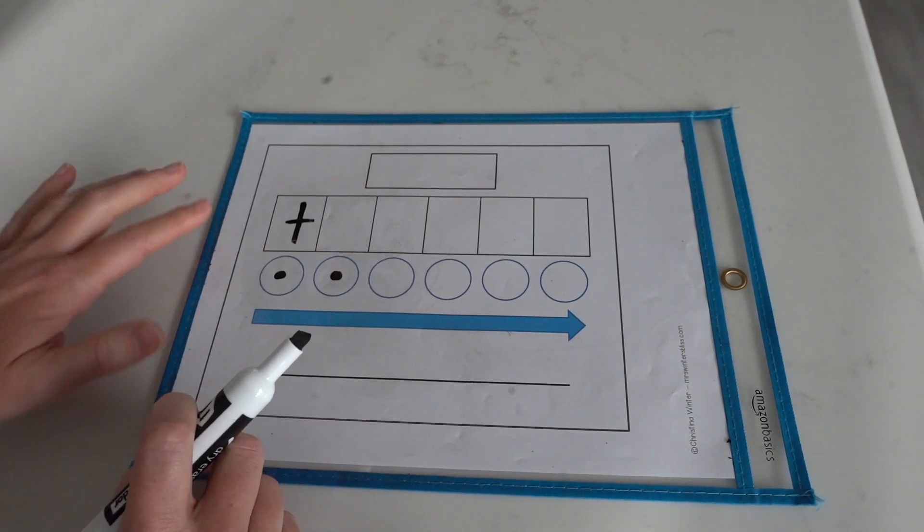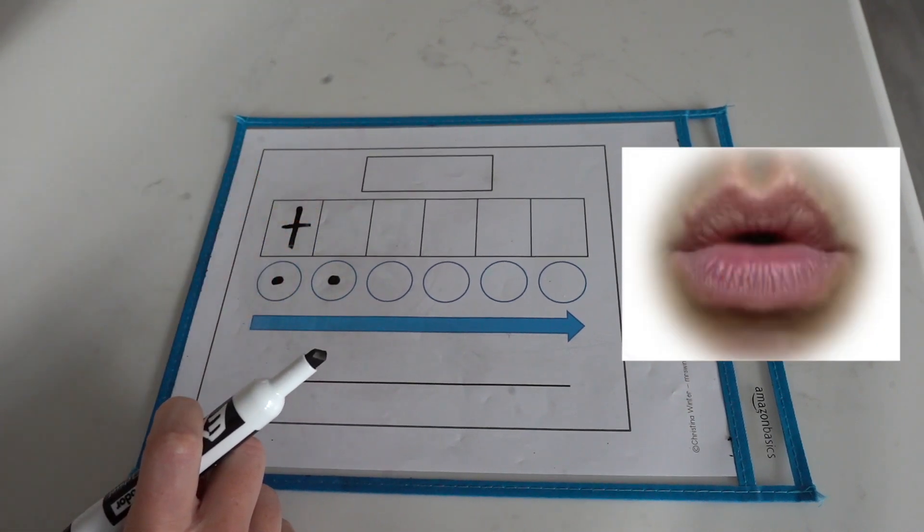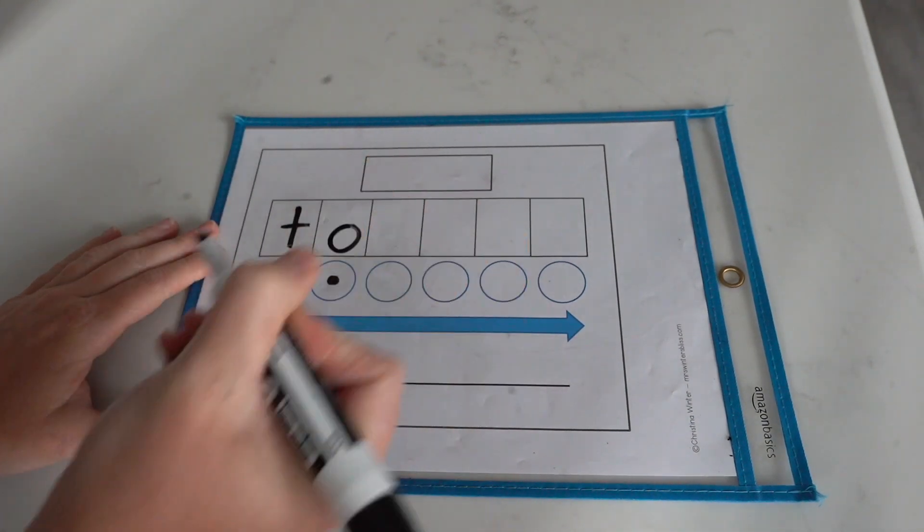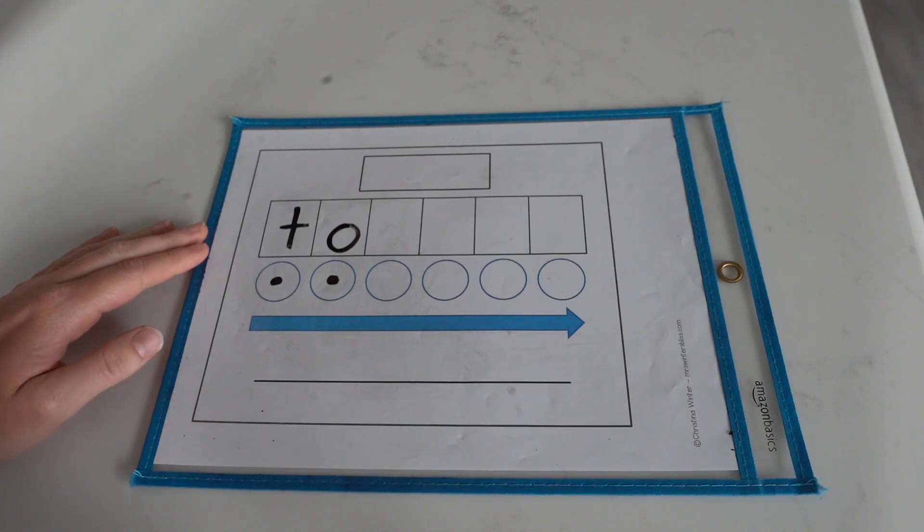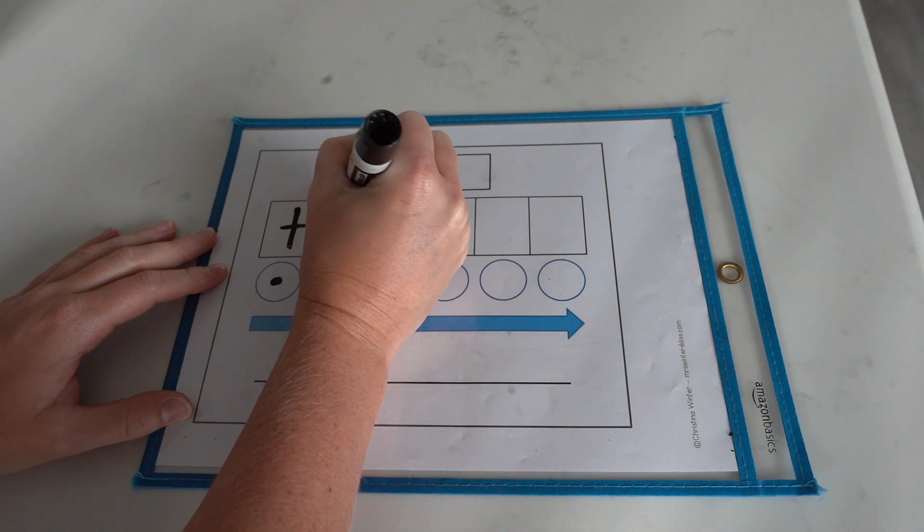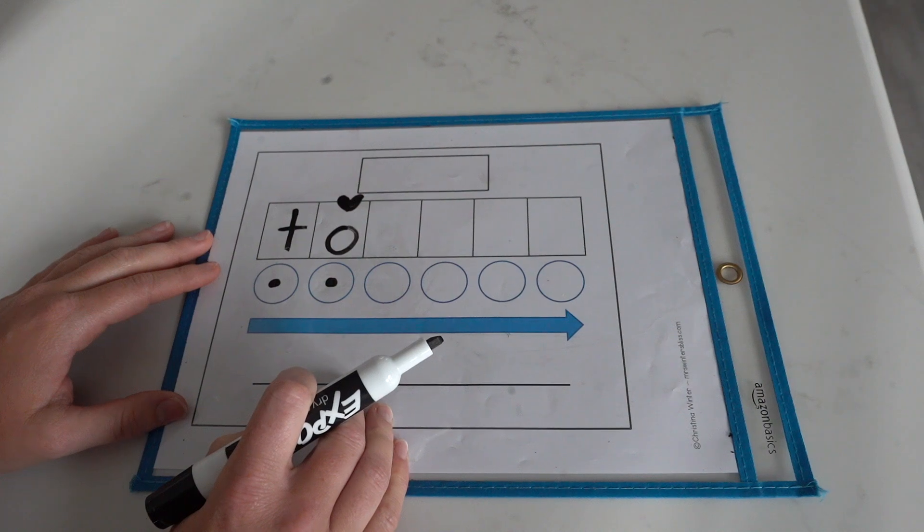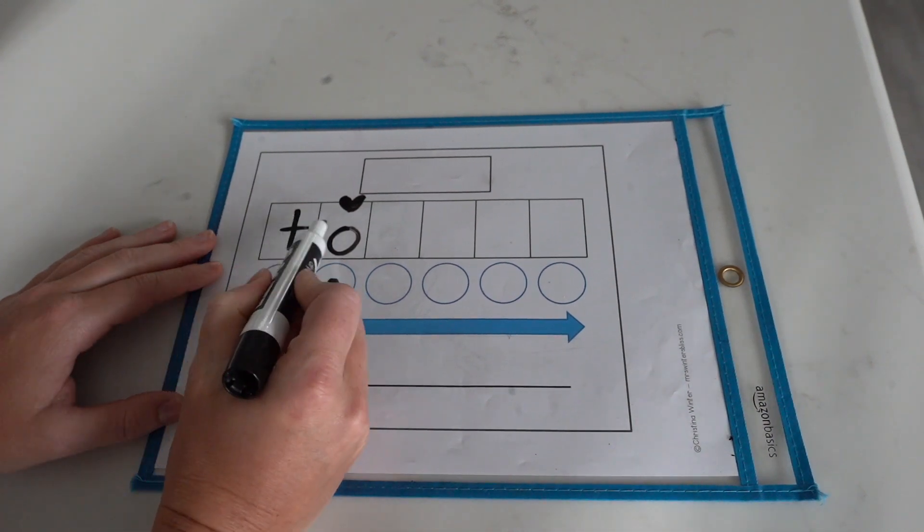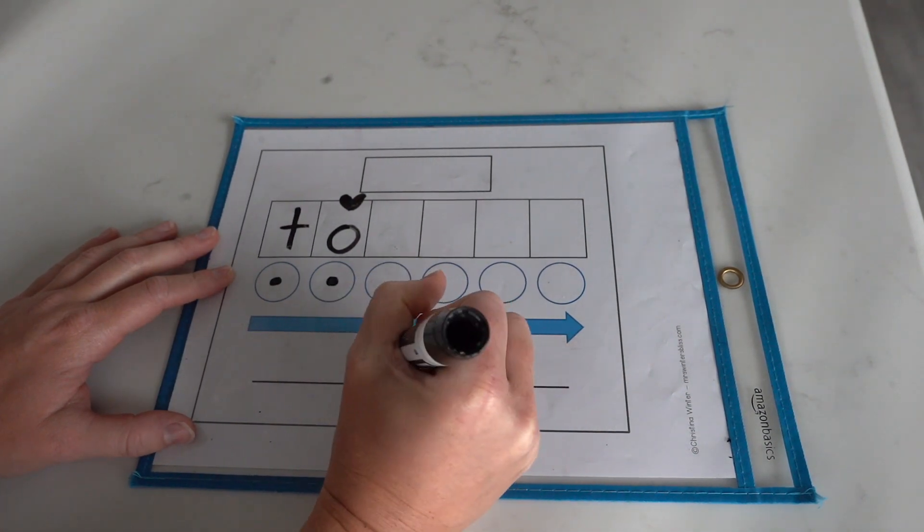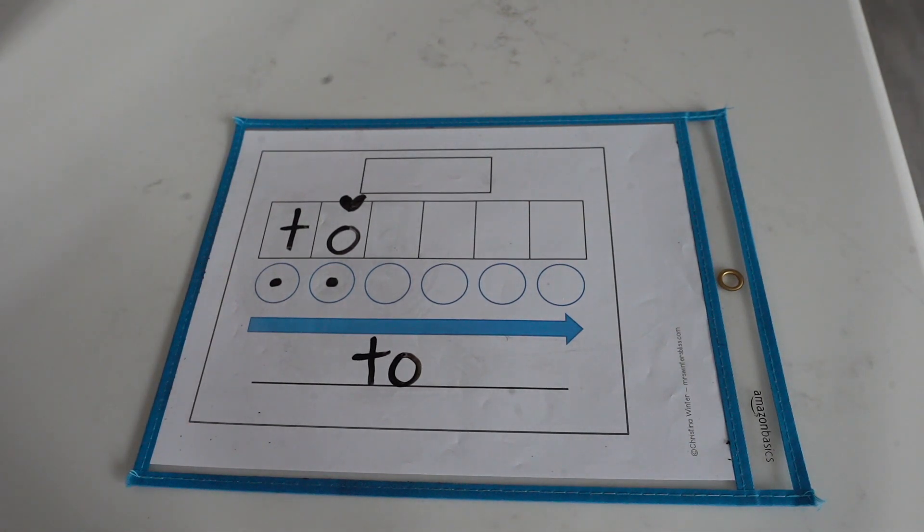Now let's move on to this sound, oo. In the word 'two', the letter o is going to represent the oo sound. And this is a part that we have to remember with our heart since it is irregularly spelled. T, oo. Now let's write it on our own. T, oo. I like to swim.